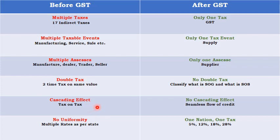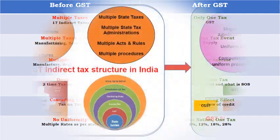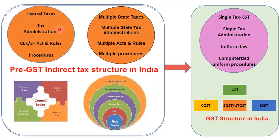Before GST, there was a cascading effect — meaning tax on tax. After GST, the cascading effect has been eliminated. Before GST, each state had its own sales tax act, so different rates existed across states. But after GST, there are only 4 tax slabs across the country: 5%, 12%, 18%, and 28%. I hope now you know the benefits of GST. You can also see in this chart the same things we just discussed — the scenario before GST, with many taxes at state level and center level, and after GST, all those taxes have been merged into GST.